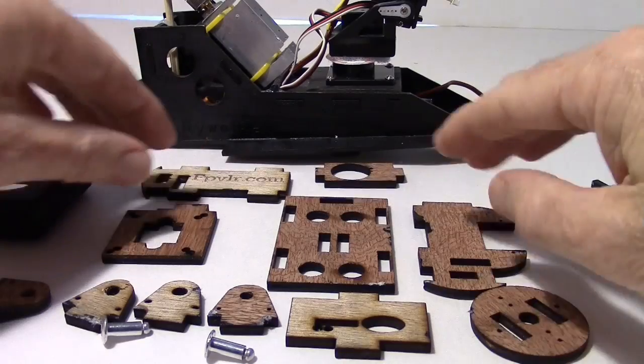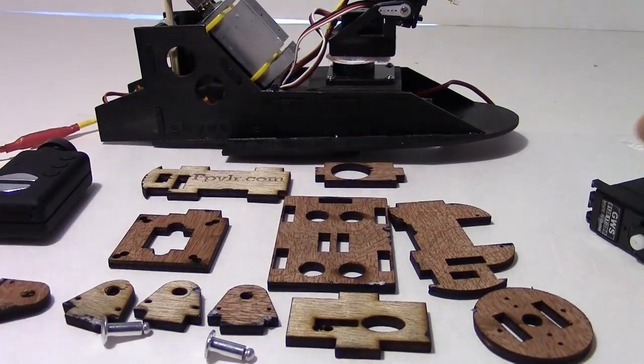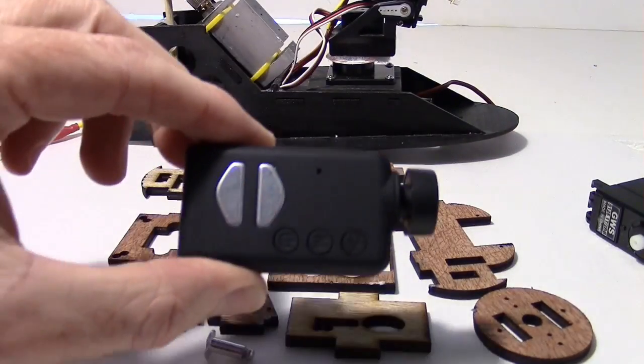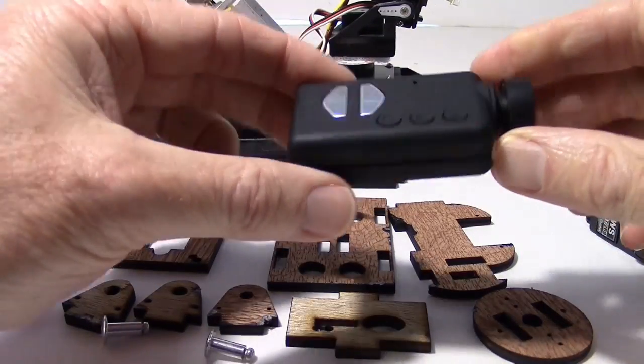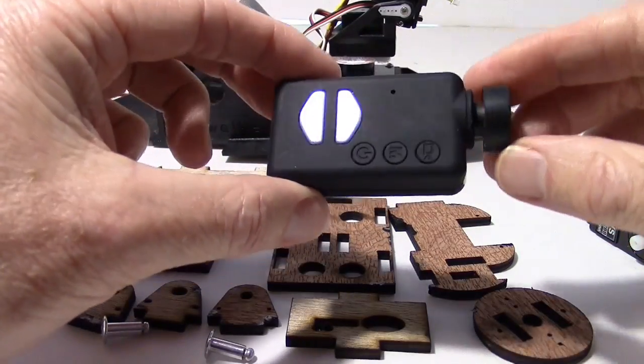It may be a little heavier than some pan tilts, but it totally encloses the Mobius camera so that it's well protected. And I like that idea.